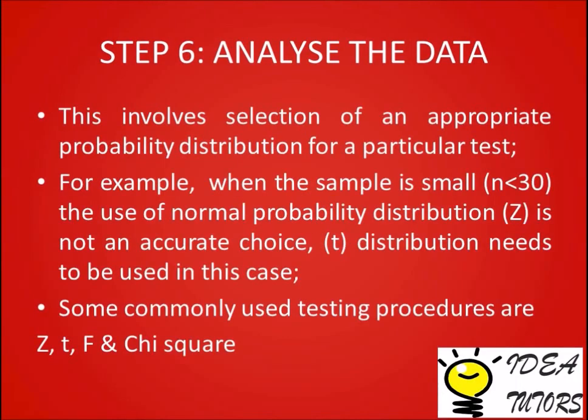Step 6: Analyze the data. This involves selection of an appropriate probability distribution for a particular test. For example, when the sample is small and less than 30, the use of the normal probability distribution Z is not an accurate choice — the T distribution needs to be used in this case. Some commonly used testing procedures are Z, T, F, and chi-square.